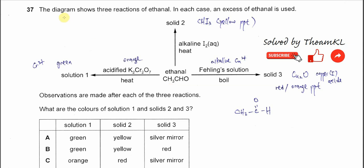Question 37. The diagram shows three reactions of ethanal. In each case, an excess of ethanal is used. Observations are made after each of these three reactions. What are the colors of solution 1 and solids 2 and 3?